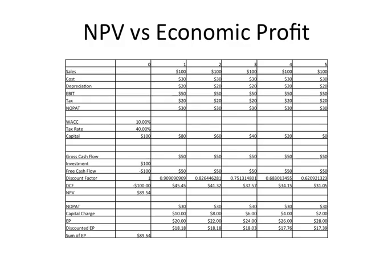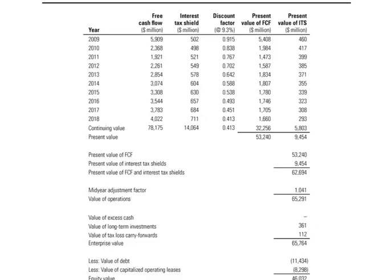I'll briefly mention method number three, APV. The book does talk about APV, and we're not going to do it — but if you do APV you should get the same answer as the enterprise DCF. If you do an adjusted present value, you use the same free cash flows in the forecast as you did in the enterprise DCF. The difference is you also forecast the interest tax shields, which is basically the tax rate times the interest — what you can write off because of the tax deductibility of debt.